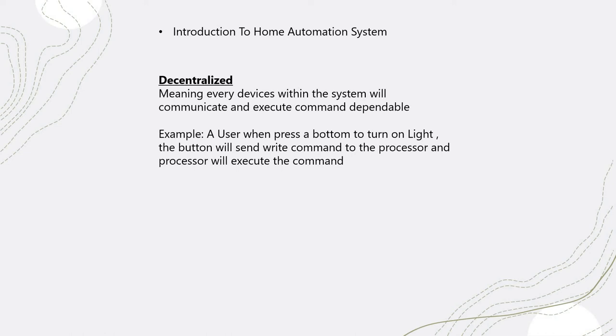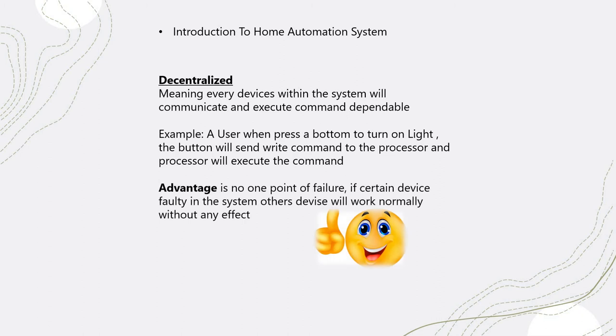The advantage of decentralized systems is that we don't have a single point of failure. If one device in a certain room is faulty, the entire house will still work fine except for that one area. You can easily call the maintenance team to fix just that area. In contrast, with a centralized system, everything in the home collapses, and you have to call the original installing company to replace or troubleshoot — which is time-consuming and causes user discomfort.